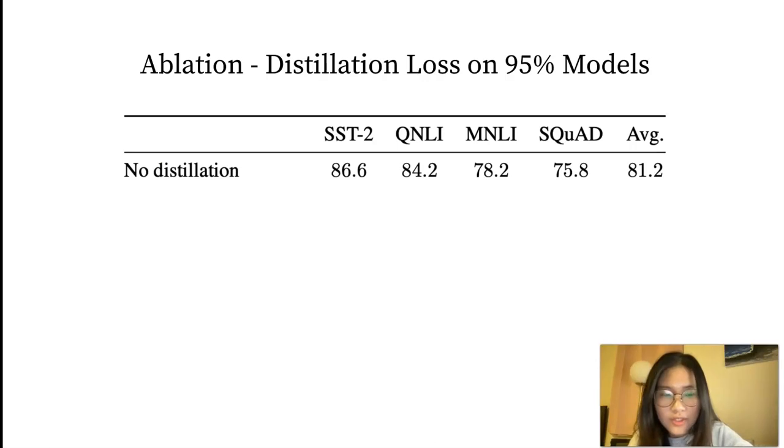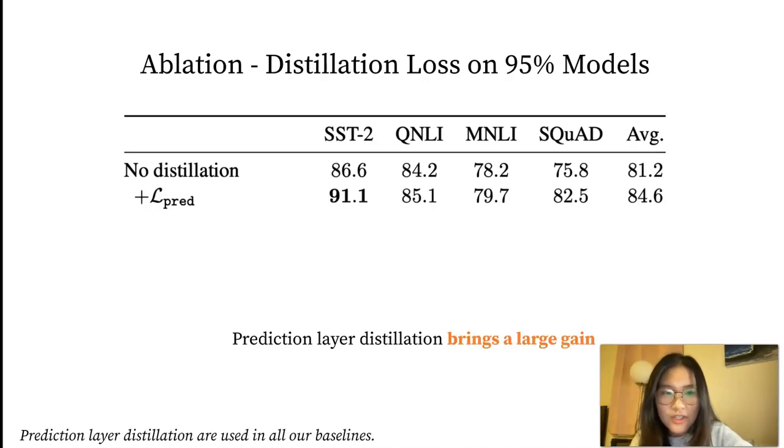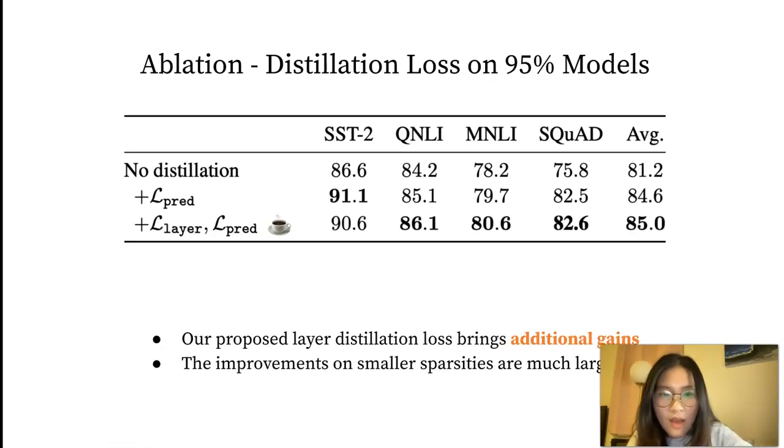Next, we show how distillation objectives help improve the performance. Adding the prediction layer distillation brings a large gain, up to 3.4 points. Our proposed layer-wise distillation loss brings additional gains, and we show in our paper that the improvements are much larger for models with smaller sparsity.